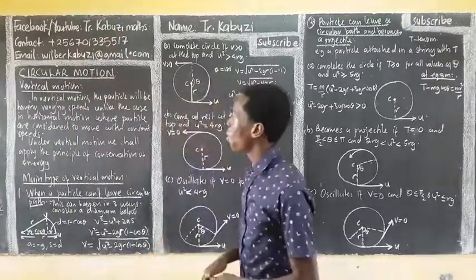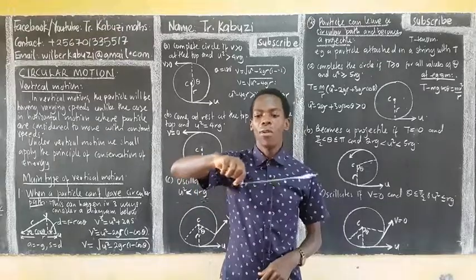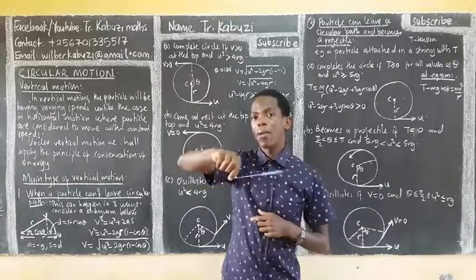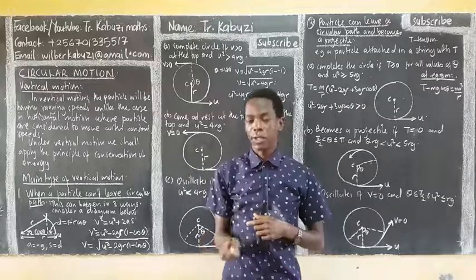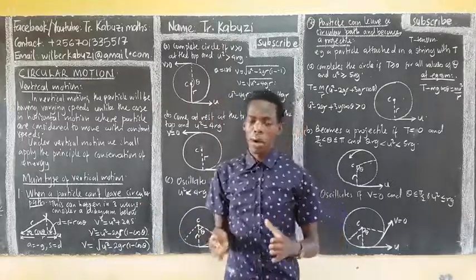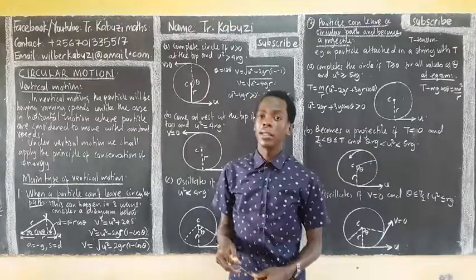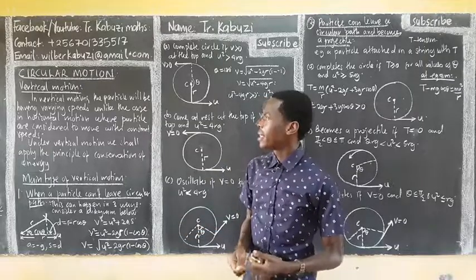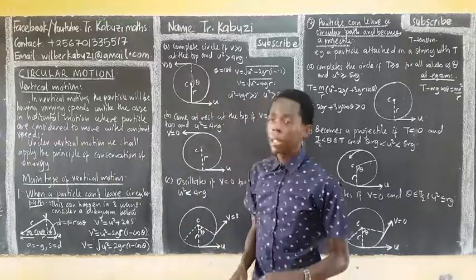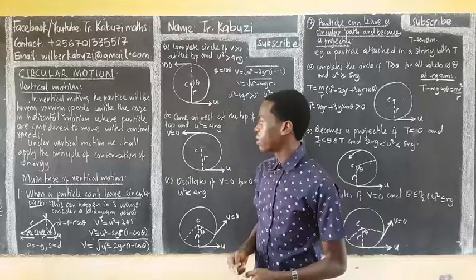Now let us see vertical motions and what happens in vertical motions. What we have been seeing is horizontal motion, where the particle always has a constant velocity. But in vertical motion, the speed is going to be varying — for example, when you rotate a particle in a circle, as it moves around, it changes. So even the acceleration is going to be varying, and we are always going to apply the principle of conservation of energy. Let us see the main types of vertical motion.